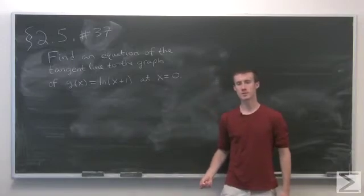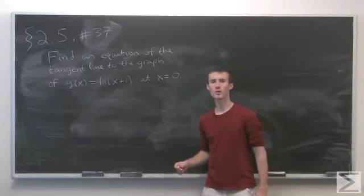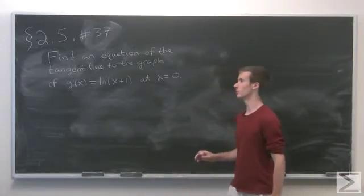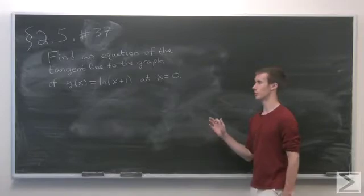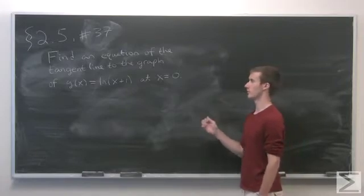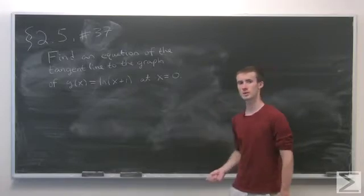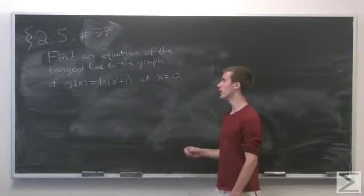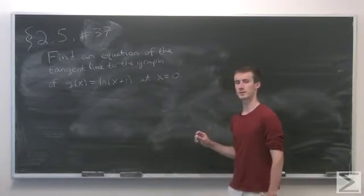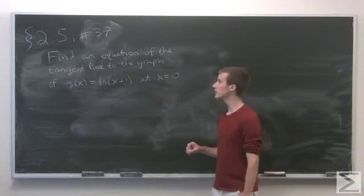Problem number 37 of section 2.5 asks us to find the equation of a tangent line to the graph of g of x equals natural log of x plus 1, at the point x equals 0.